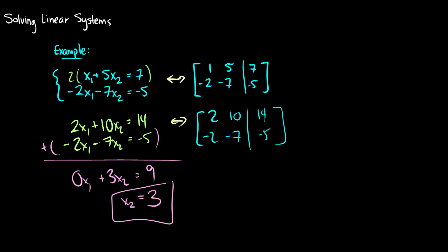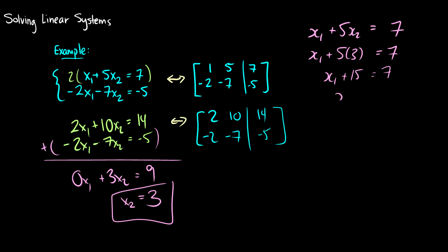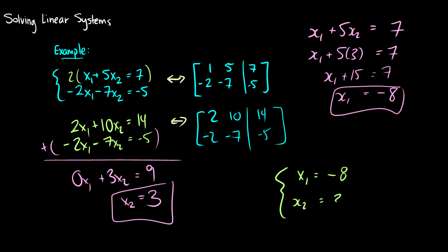We can plug x2=3 back into one of our original equations: x1 plus 5x2 equals 7, so x1 plus 5 times 3 equals 7, meaning x1 plus 15 equals 7, which gives x1 equals negative 8. So our solution is x1 equals negative 8 and x2 equals 3 — the point where the two lines intersect. That's how we solve linear systems the old high school way.